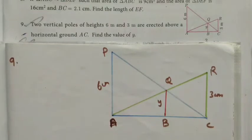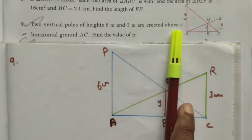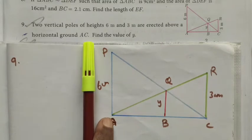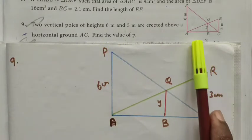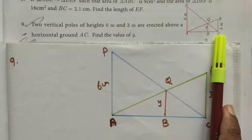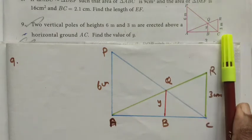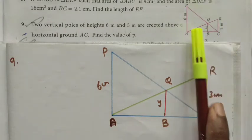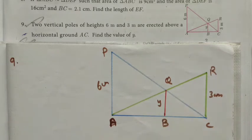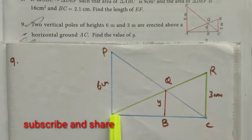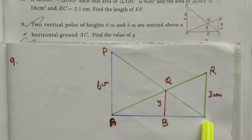Hi students, Class 10, Exercise 4.1, Question 9. Two vertical poles of height 6 centimeters and 3 centimeters are erected above a horizontal ground AC. We need to find the value of y. AC is given. The triangles involved are triangle APC and triangle ARC.